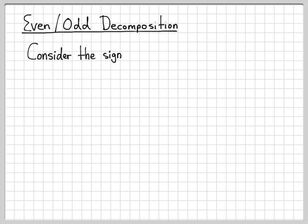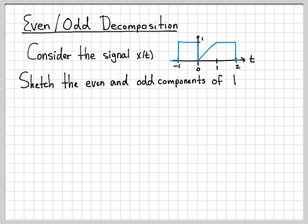We're going to work with the signal x(t). And the signal x(t) looks like this. So it's a rectangle followed by a ramp that then holds off to a steady value. So that's our signal x(t). And what we're asked to do in this problem is to sketch the even and odd components of the signal.